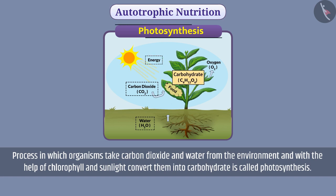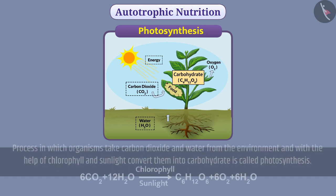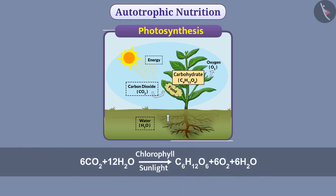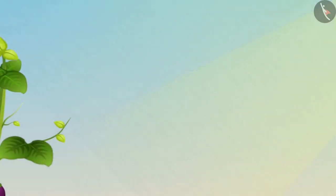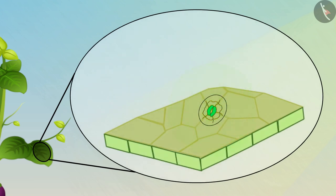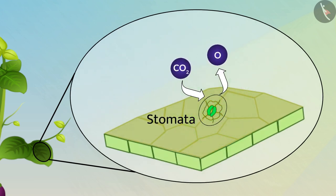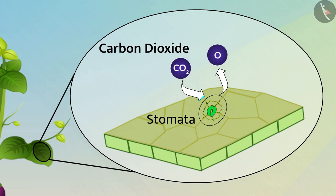The process of photosynthesis is represented in this form. For photosynthesis, carbon dioxide, water, chlorophyll, and sunlight are necessary. On the leaf surface, there are microscopic pores called stomata. Stomata exchange gases. With their help, carbon dioxide is taken from the air and oxygen is released into the air.